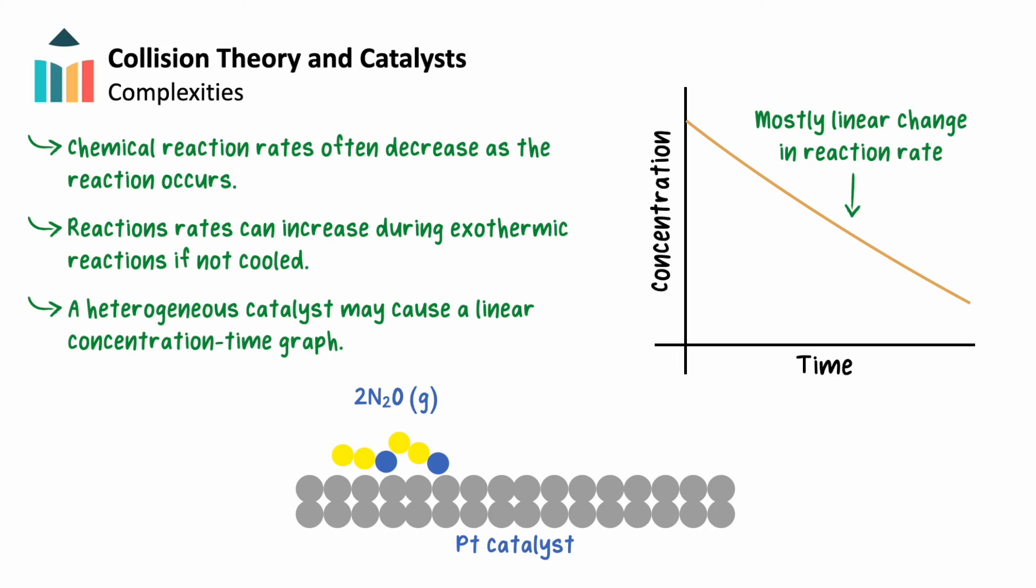The catalysis of dinitrogen monoxide into nitrogen and oxygen gas by a hot platinum wire can be used as an example. Here we can see dinitrogen monoxide adsorb onto the platinum surface. The chemical reaction then takes place, and molecules of nitrogen and oxygen are made as products.